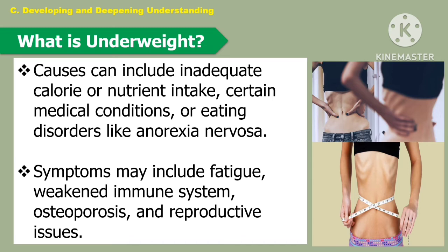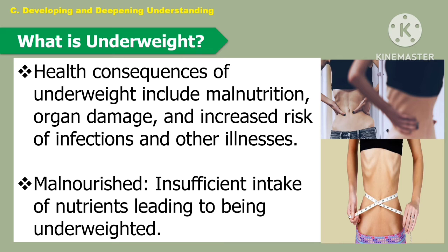The following include the inadequate calorie or nutrient intake, certain medical conditions or eating disorders like anorexia nervosa. Symptoms may include fatigue, weakened immune system, osteoporosis, and reproductive issues. Health consequences of underweight include malnutrition, organ damage, and increased risk of infections and other illnesses. Malnutrition is the insufficient intake of nutrients leading to being underweight.